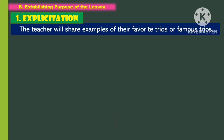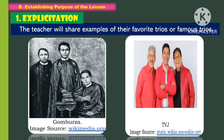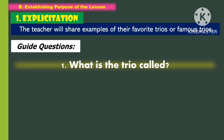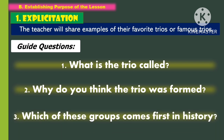For the explicitation, the teacher will share examples of their favorite triads or famous triads. Afterward, students will answer the following questions: first, what is the triad called? Second, why do you think the triad was formed? And third, which of these groups comes first in history?